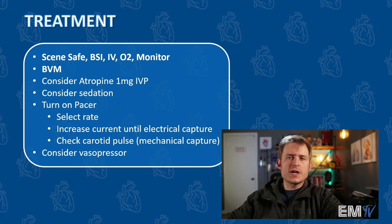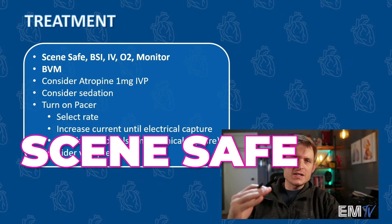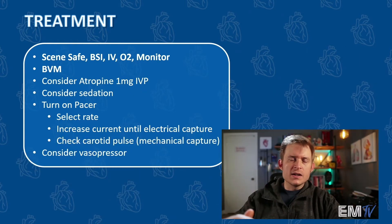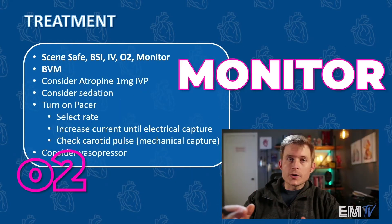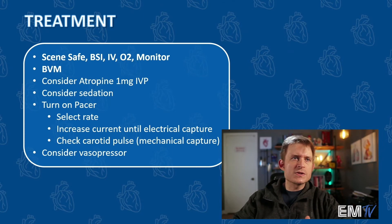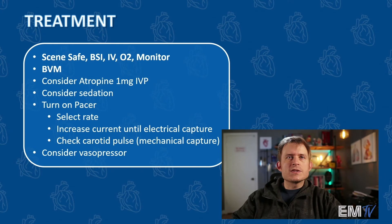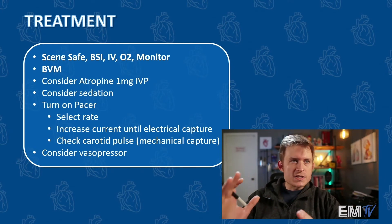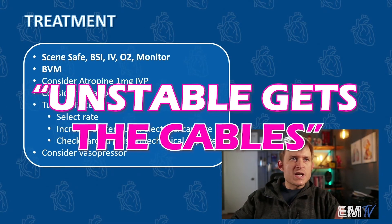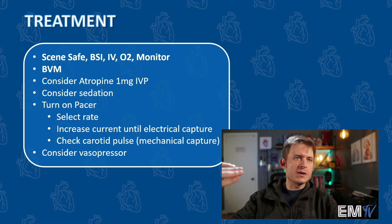Just like with every other static cardiology card, I'm going to begin my treatment by reciting the mantra: scene safe, BSI, IV, O2, monitor. Because this patient is apneic, my next step is BVM-ing this patient — providing positive pressure ventilations using a bag valve mask. Because they're bradycardic, per AHA guidelines, I should consider administering atropine 1mg IV push, but because they're unstable — the saying is unstable gets the cables — I'm going to default to electricity.